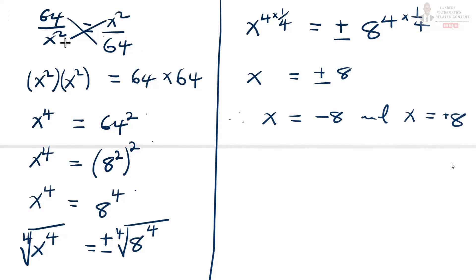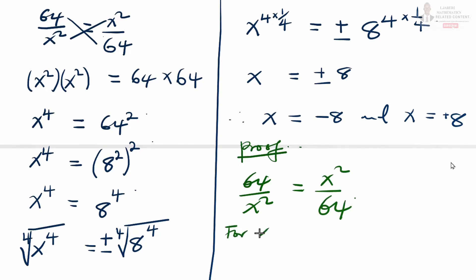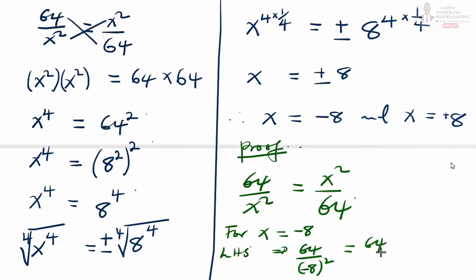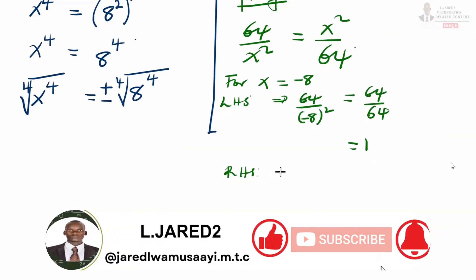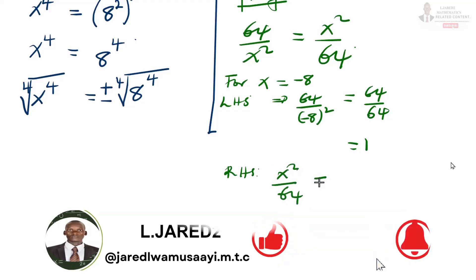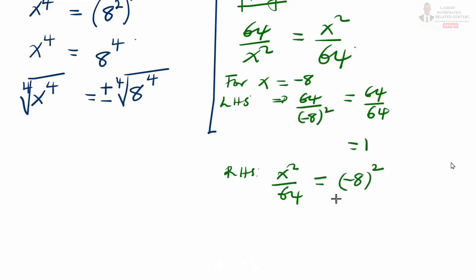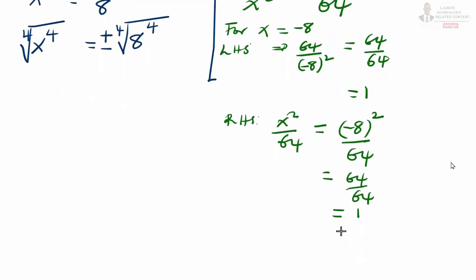From here, we can try to prove whether it is correct. Remember, we have 64 divided by x squared equal to x squared divided by 64. Let us consider x equals negative 8. On the left hand side, we have 64 divided by negative 8 squared, which equals 64 divided by 64, giving us 1. On the right hand side, x squared divided by 64 gives us negative 8 squared divided by 64, which is 64 divided by 64, also giving us 1. The left hand side equals the right hand side.